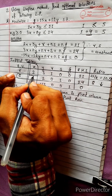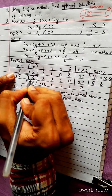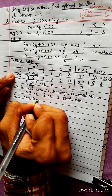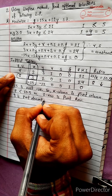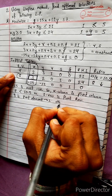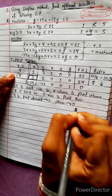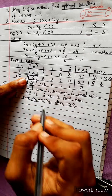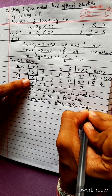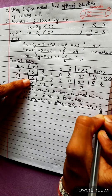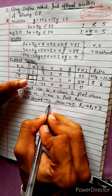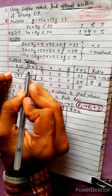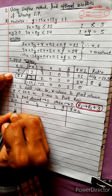The pivot element is 3. The operation is R1 change into R1 divided by 3. This transfers X by R1. R1 divided by 3 gives: 2 divided by 3, 3 divided by 3, and so on.